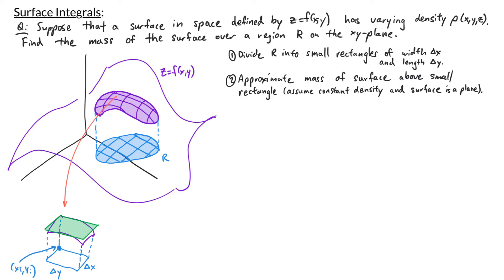Let's say that the point right here is (xi, yi), so I have a corresponding point on my surface (xi, yi, f of xi yi), and my tangent plane approximation is based on that point. The vector going in the x direction is given by (delta x, 0, partial derivative of f with respect to x evaluated at xi yi times delta x). The vector going in the y direction is given by (0, delta y, partial derivative of f with respect to y evaluated at xi yi times delta y). Now that we have the two vectors bordering the edge of the tangent plane, we can find the area by taking the magnitude of the cross product.